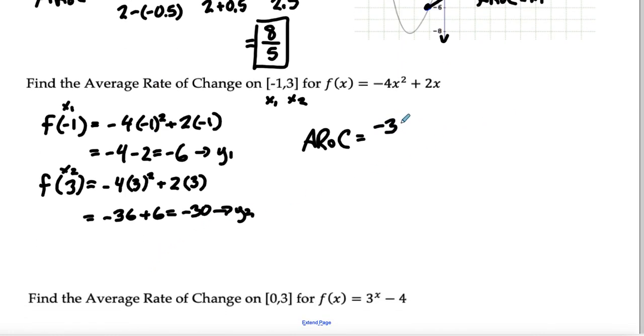y2 is negative 30 minus a negative 6, so that's really going to turn into plus 6. And then we have on the bottom, x2 is 3 minus a negative 1.